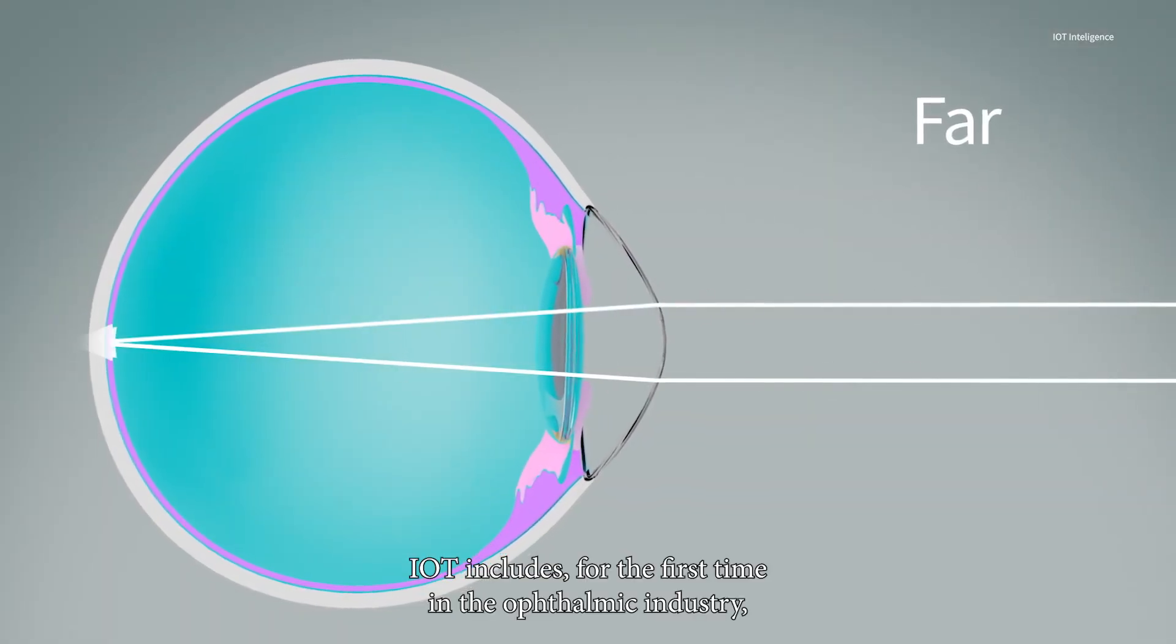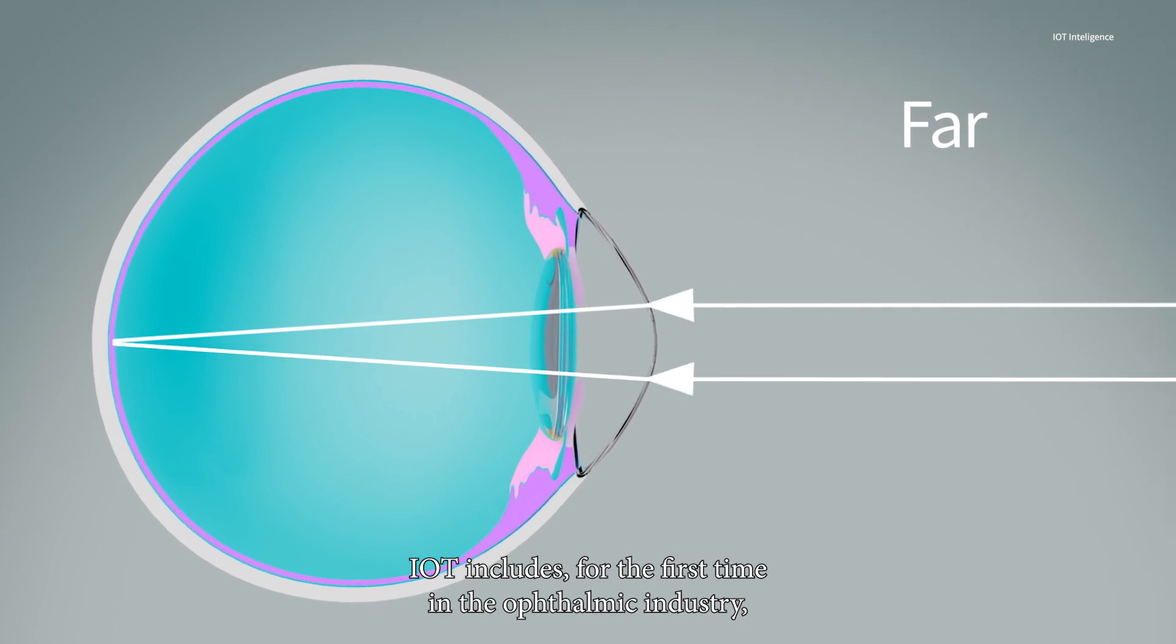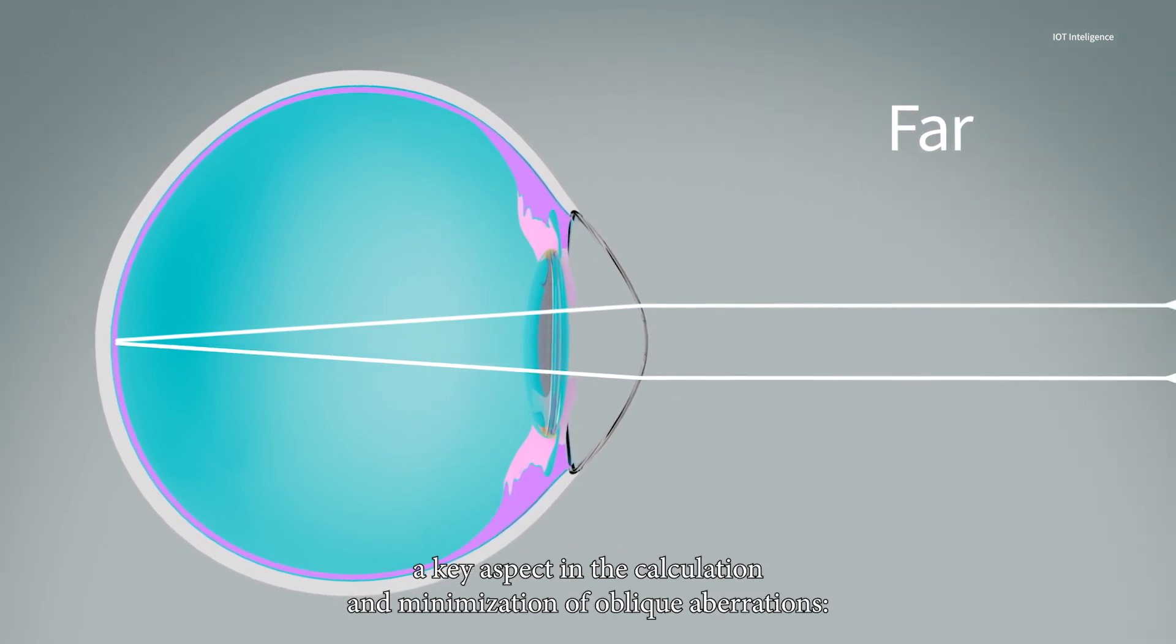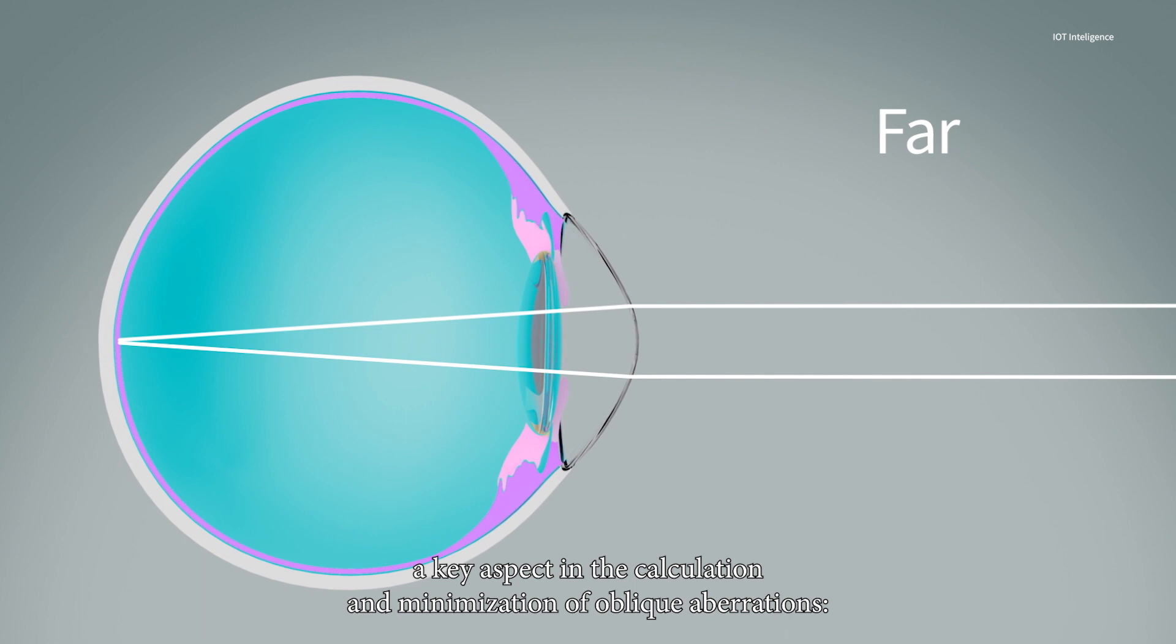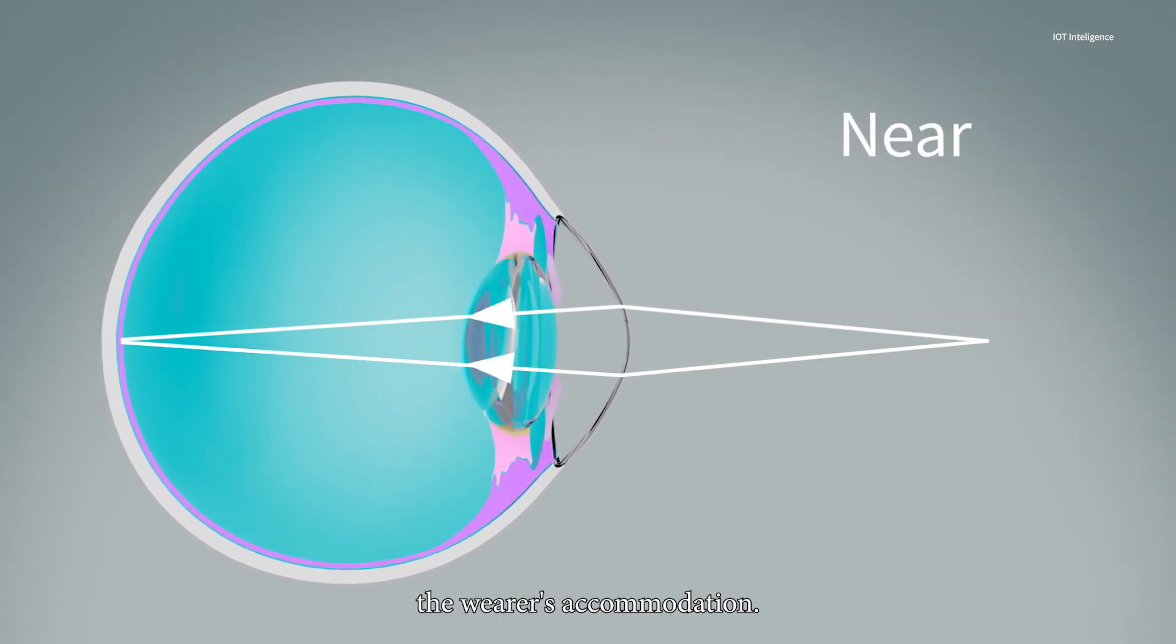IoT includes, for the first time in the ophthalmic industry, a key aspect in the calculation and minimization of oblique aberrations: the wearer's accommodation.